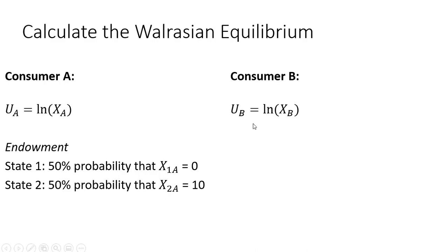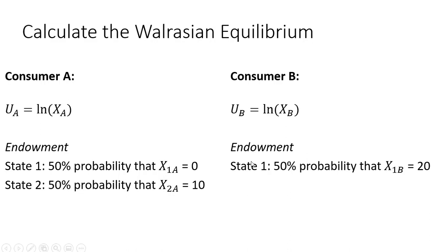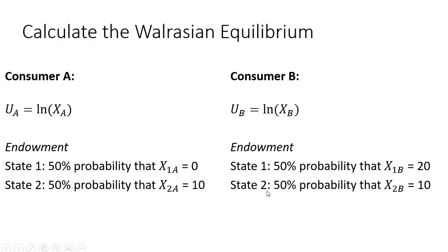Consumer B has the same utility function. The endowment: there is a 50% probability that consumer B will have 20 units of good x in state 1, and in state 2, there's a 50% probability that consumer B will have 10 units of good x.